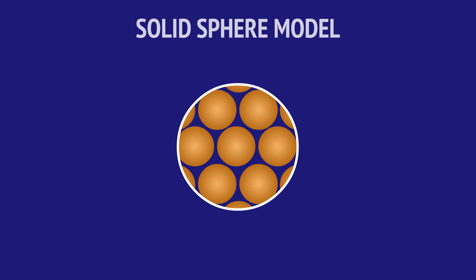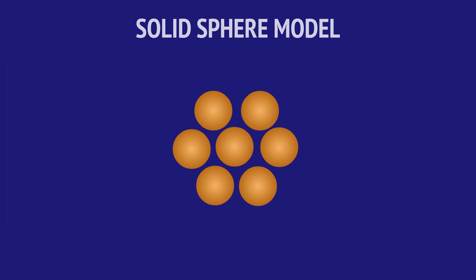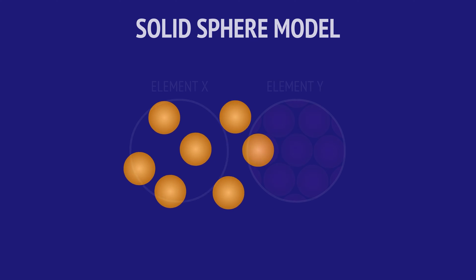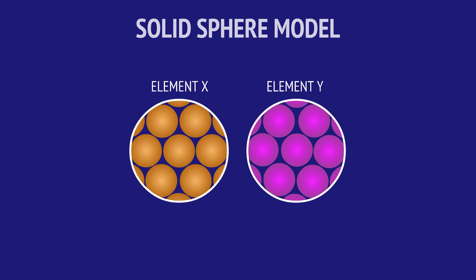His theory stated that all matter is made up of extremely small, spherical particles called atoms, which cannot be created, destroyed, or divided into smaller parts. That atoms of a given element are identical in their physical and chemical properties, and that atoms of different elements differ in their physical and chemical properties.